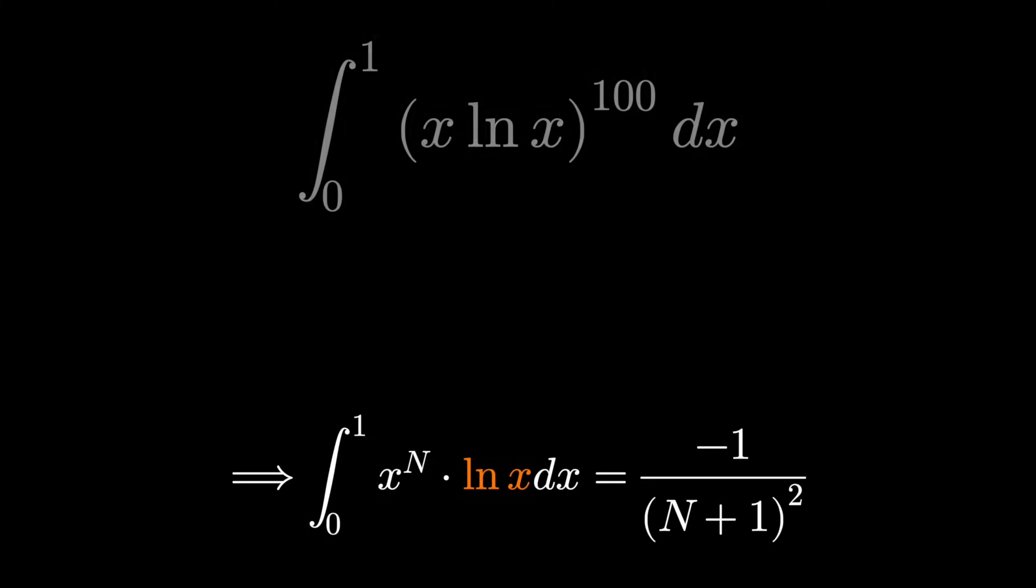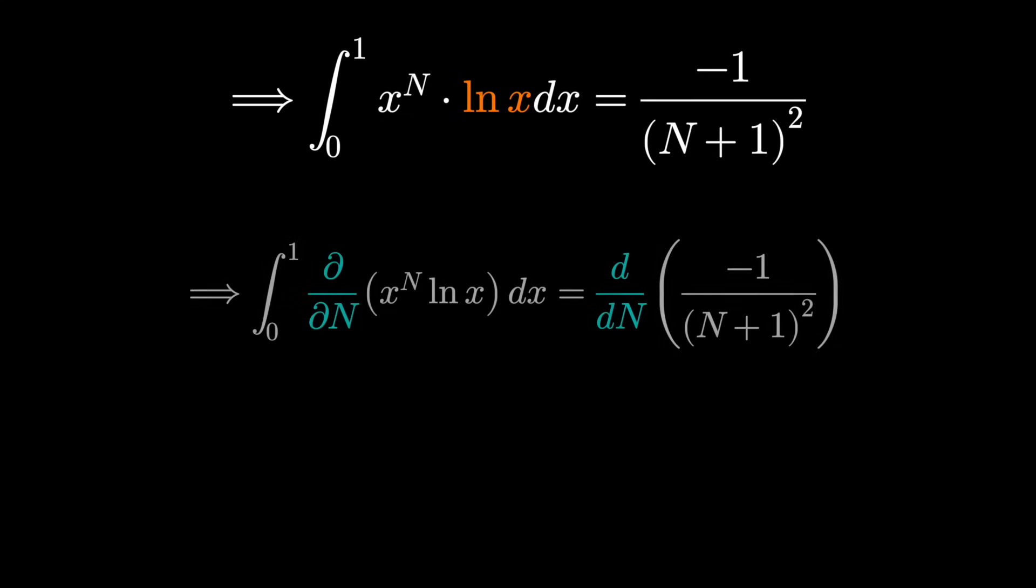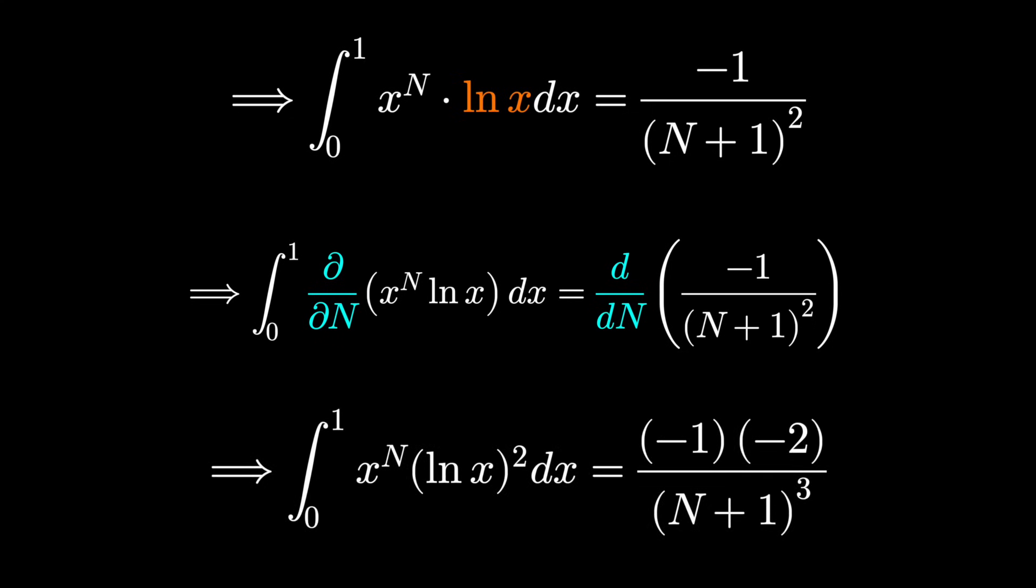But what if we kept going? What if we took the derivative of both sides again? Well, on the left, we would just move the derivative inside the integral. We'd take the derivative of x to the n again, which would be x to the n times ln x, and we'd have ln x squared.